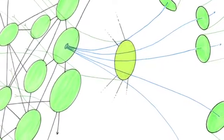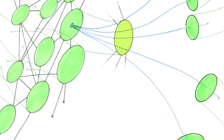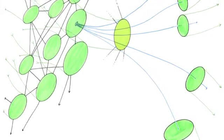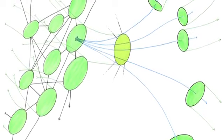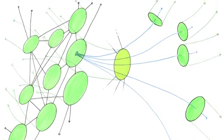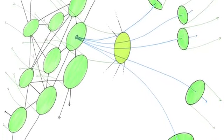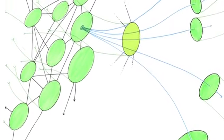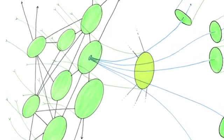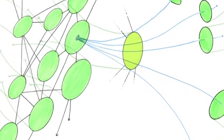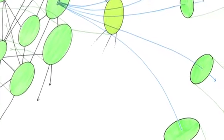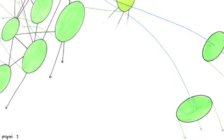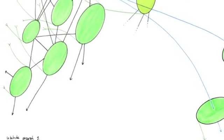Principle of asignifying rupture, against the oversignifying breaks separating structures or cutting across a single structure. A rhizome may be broken, shattered at a given spot, but it will start up again on one of its old lines, or on new lines. You can never get rid of ants because they form an animal rhizome that can rebound time and again after most of it has been destroyed.